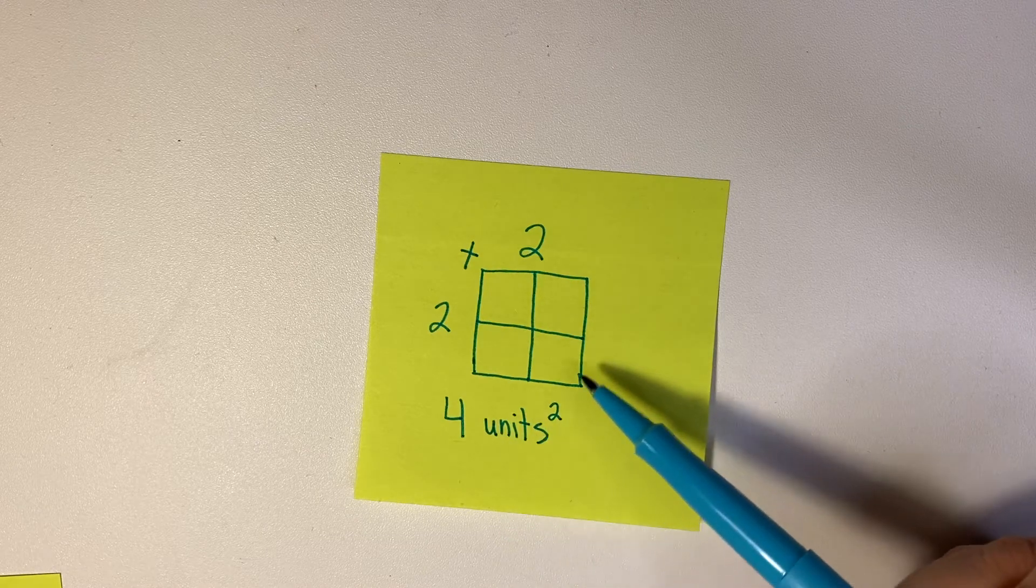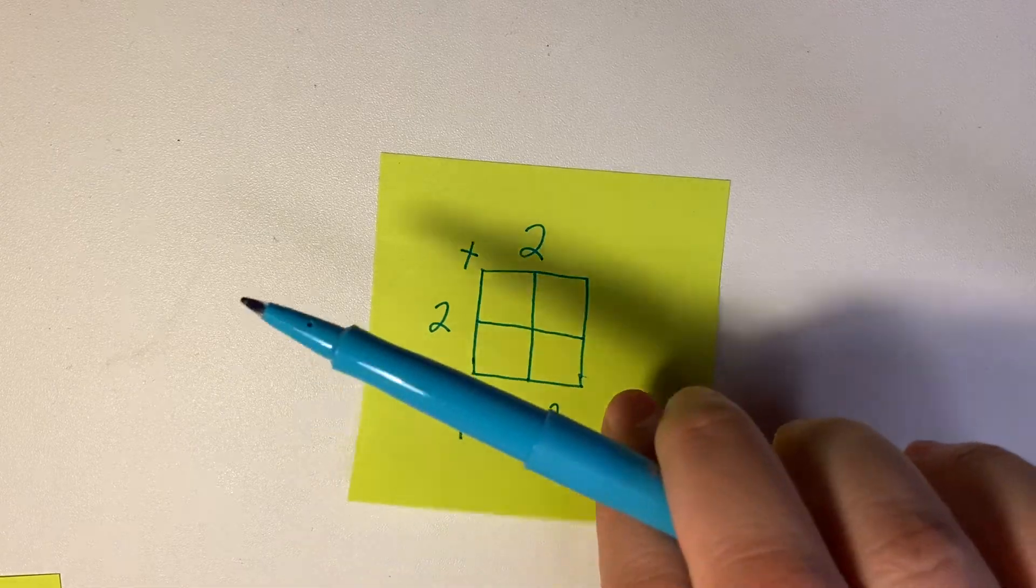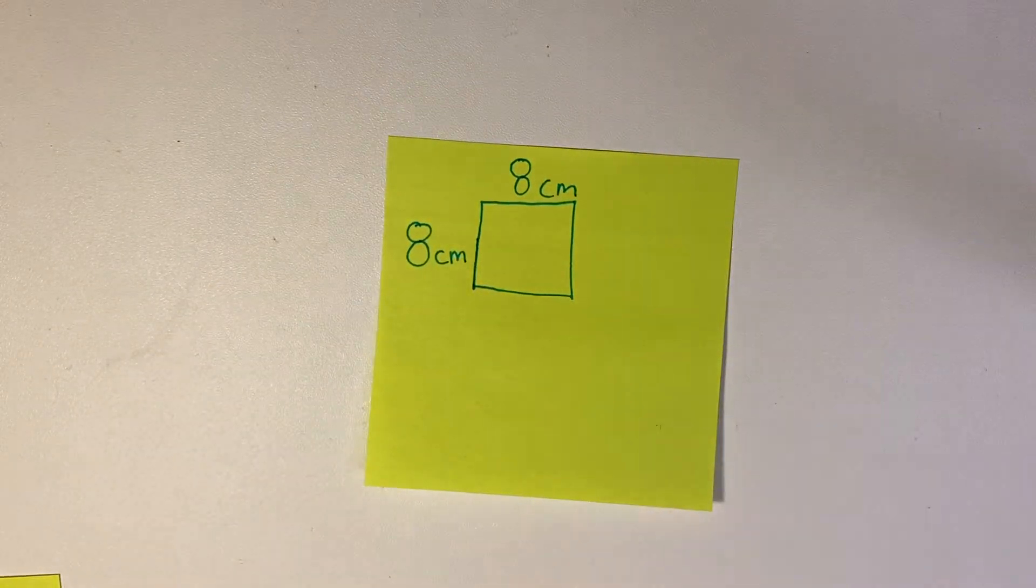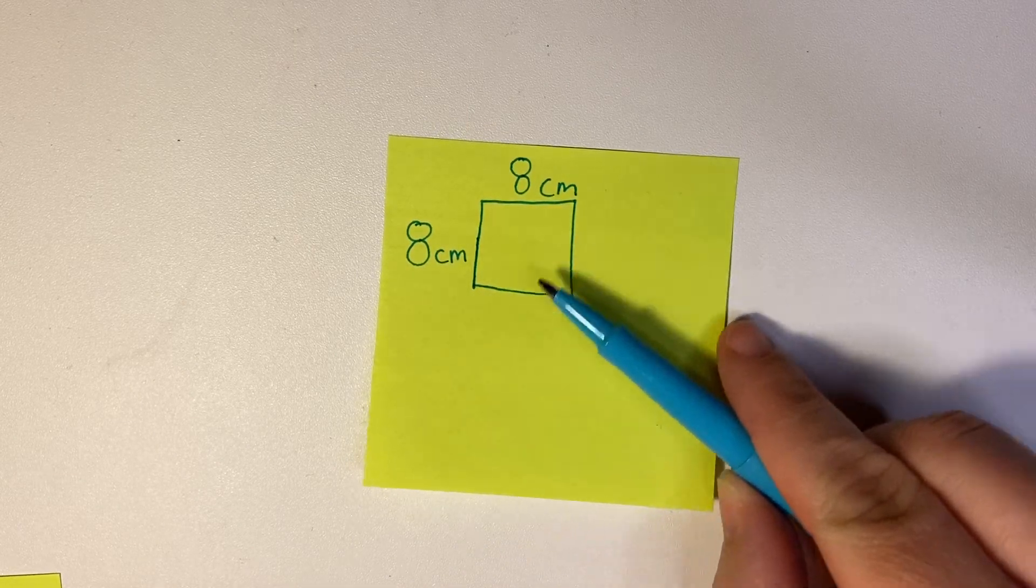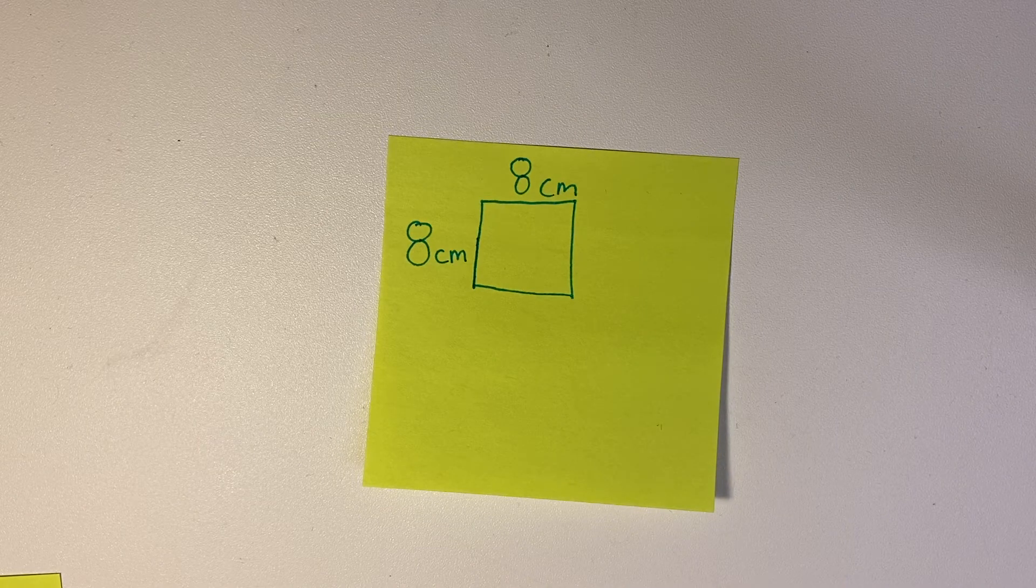Let's look at some examples. Here's a square that is an 8 centimeter by 8 centimeter square. Now I could draw all the lines in there both ways and count all the squares, and that would equal the same as just doing eight times eight.